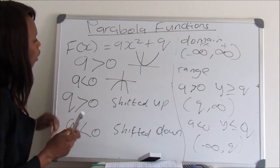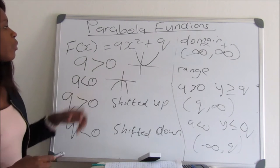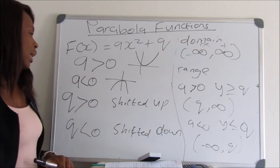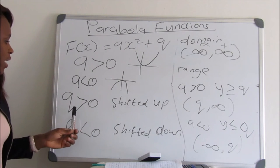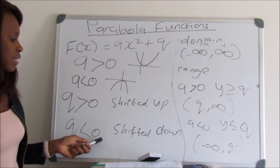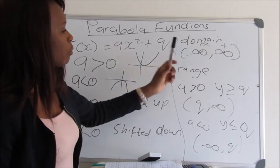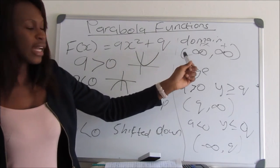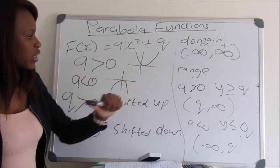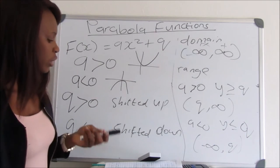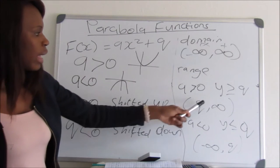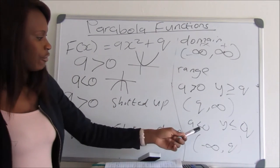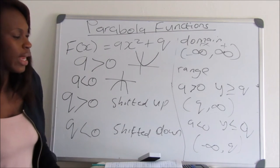With the standard equation f(x) = ax² + q: if a is greater than zero, the graph opens upward; if a is less than zero, the graph opens downward. The value q defines the shifting — if q is greater than zero the graph shifts up, and if q is less than zero it shifts down. The domain goes from negative infinity to positive infinity, and the range depends on a and q accordingly.